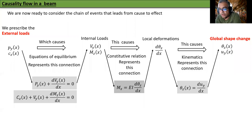So you can see that there are four equations. First two equations of equilibrium connect the external loads to the internal loads. The next one constitutive relation connects the internal loads to the local deformations. Then the next one, which is the kinematics, connects the local deformations to the global shape change. These four equations are to be used to find the eventual effects given the primal causes.